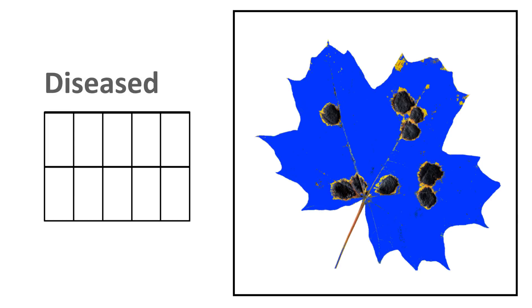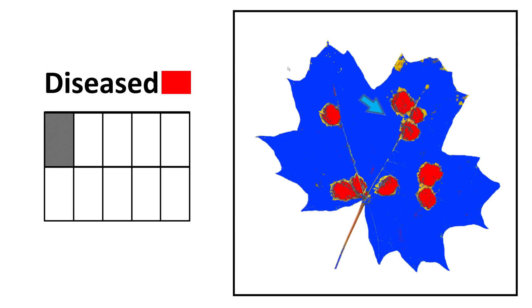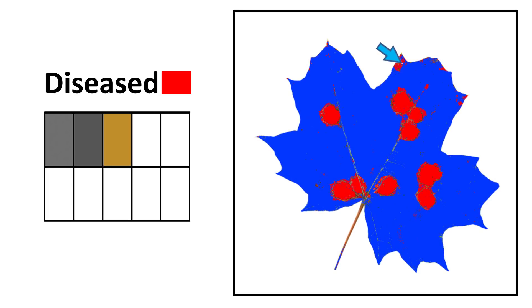Now, select a single colour to represent the diseased sections of the leaf. We'll choose red. And click on the diseased sections of the leaf in exactly the same way. Until all diseased sections are selected.